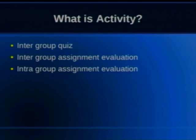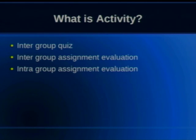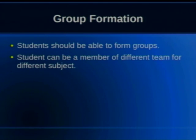What is an activity? The core part of the system is the activity, and activities are of three types: intergroup quiz, intergroup assignment evaluation, and intragroup assignment evaluation. The whole idea is that a class of 50 students is divided into groups. The number of students in a group is decided by the teacher, and which group to join is the student's choice. Students can be members of different groups for different subjects.